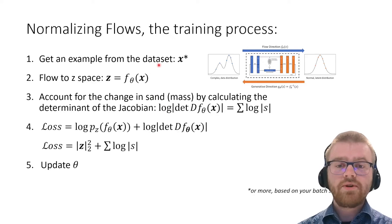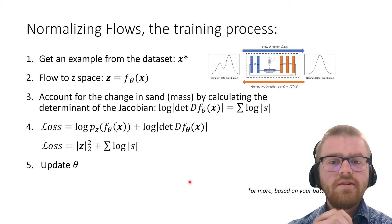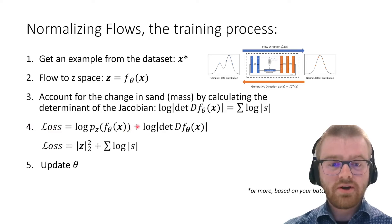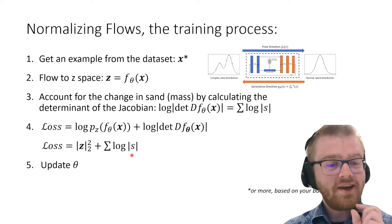The training process is as follows: we get an example x from the dataset, push x to z with our flow function, and account for the change in sand by calculating the determinant of the Jacobian—in our case, a summation of all scales. The loss is log p(z) plus the log determinant—the L2 norm of z plus a summation over s. Now we can backpropagate easily and update theta.